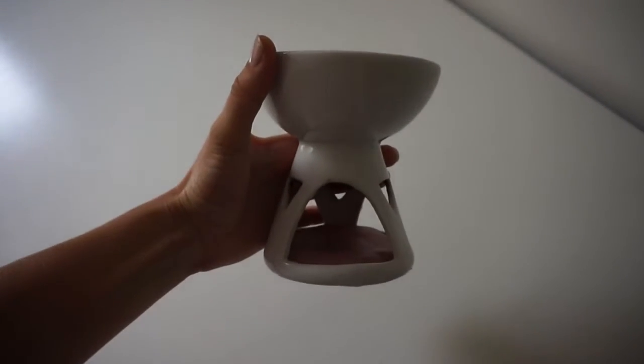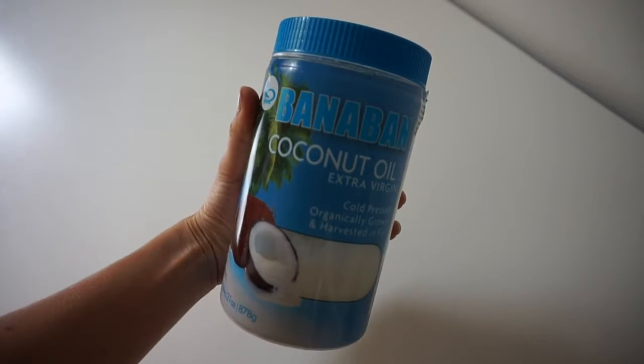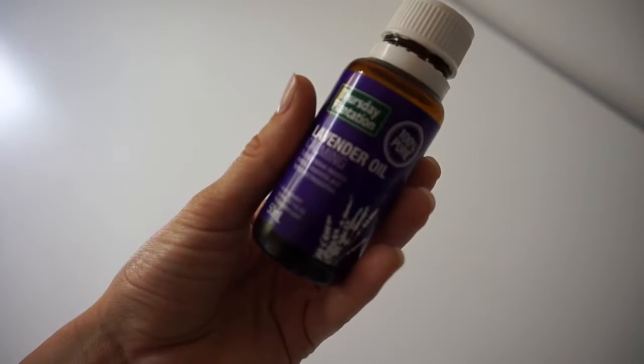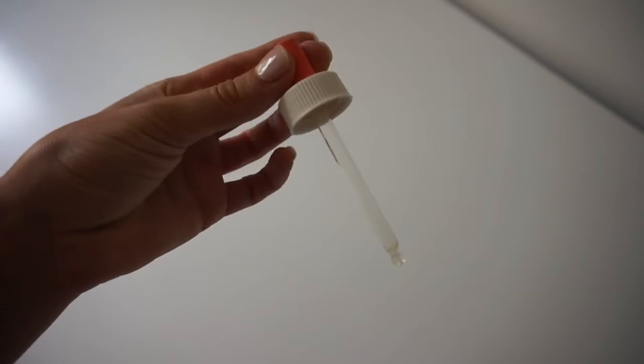The first thing we'll be making is an organic coconut melt, so you'll need a glass melting pot and a candle which I didn't show, some coconut oil, essential oil of your choice - I'm using lavender as it has a calming effect - and a dropper if your oil does not already have a built-in one.